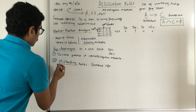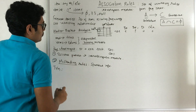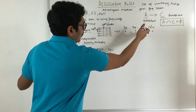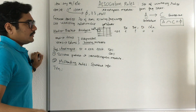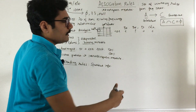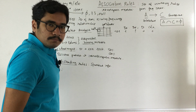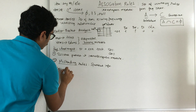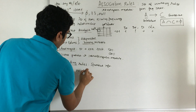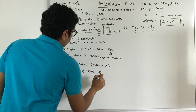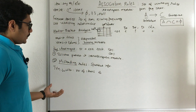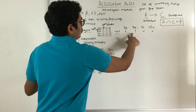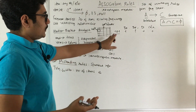A transaction is one event — for example, one customer goes to a supermarket and buys bread, beer, diapers, and cola, then does billing. That is one transaction. Transaction width refers to the number of items contained in a particular transaction. For example, transaction T01 contains 4 items, so its transaction width is 4.